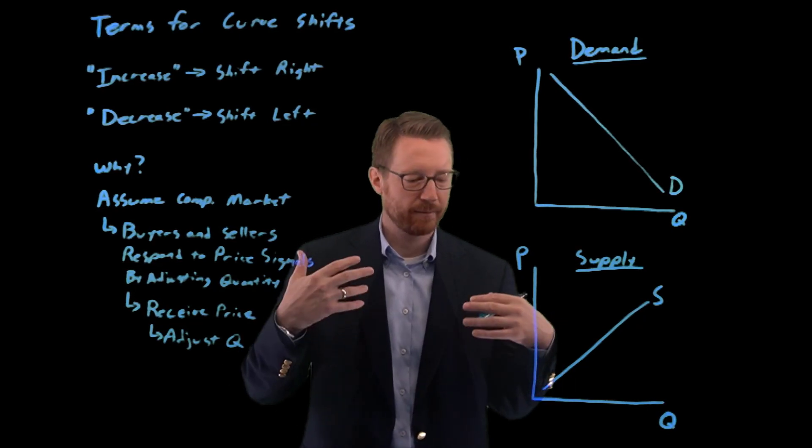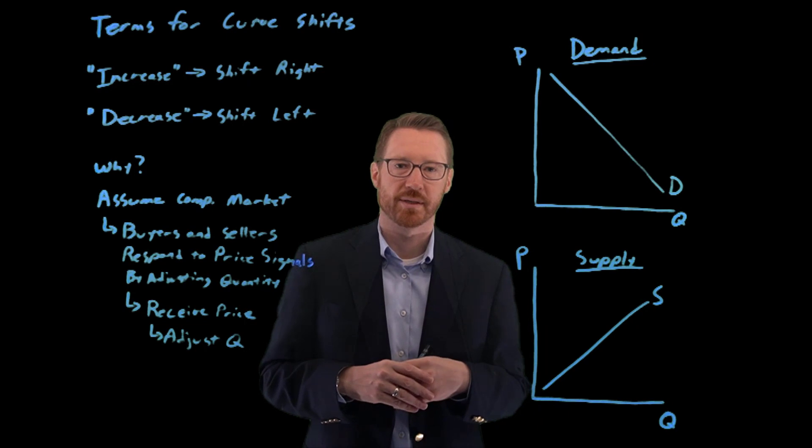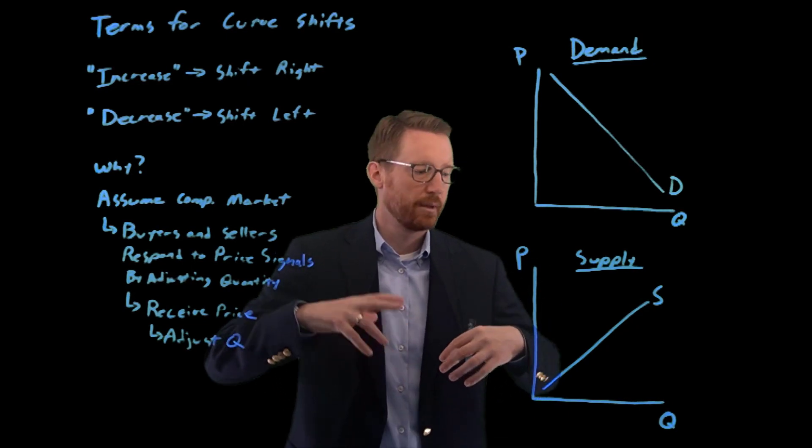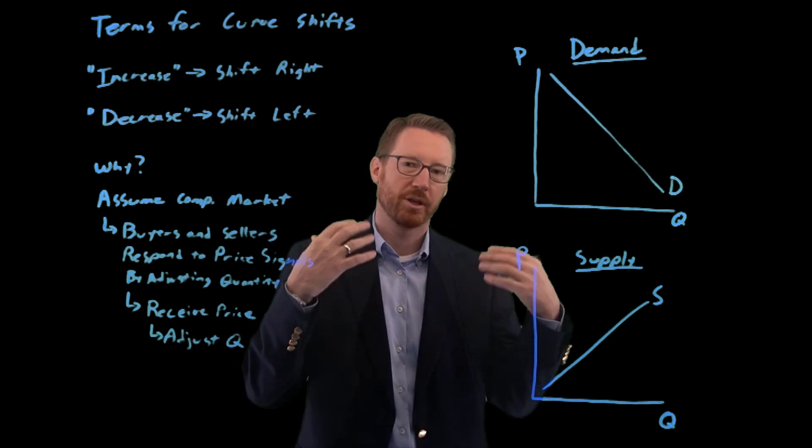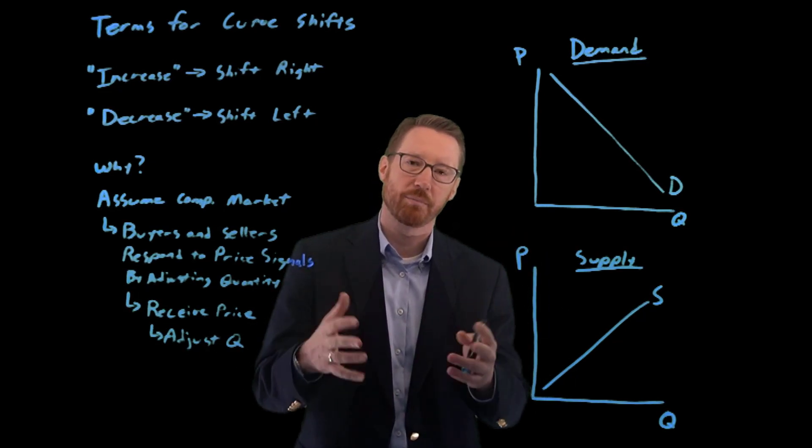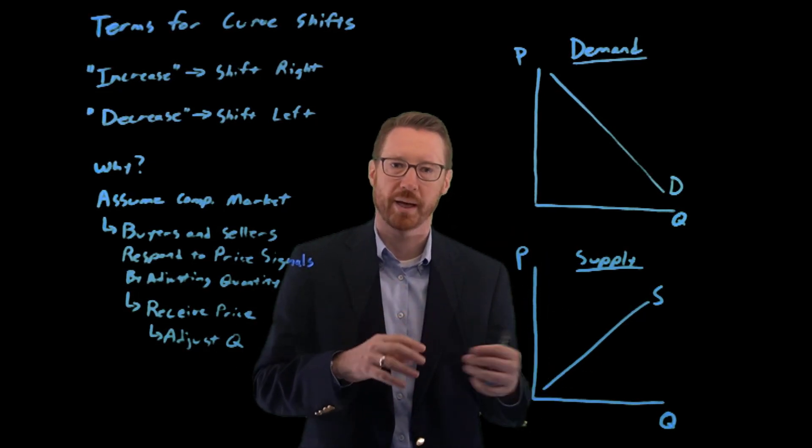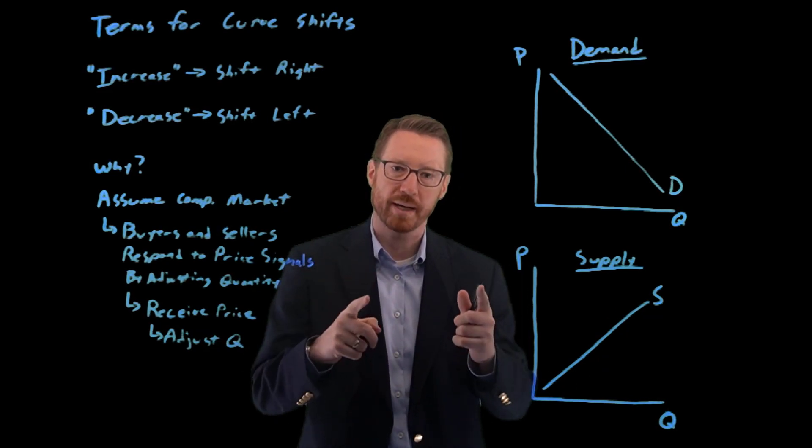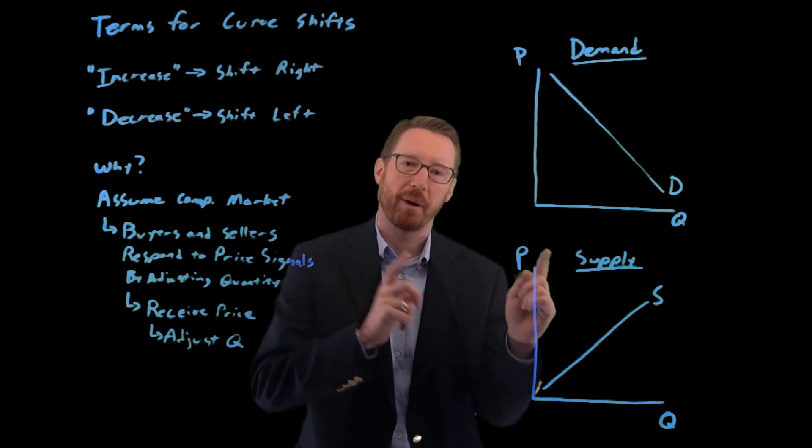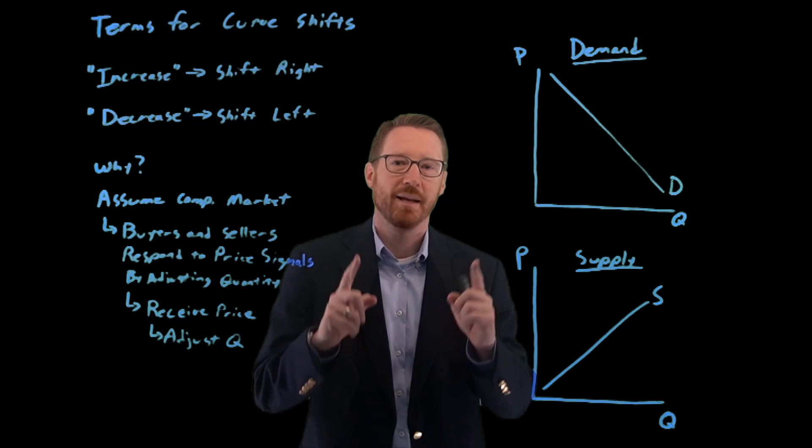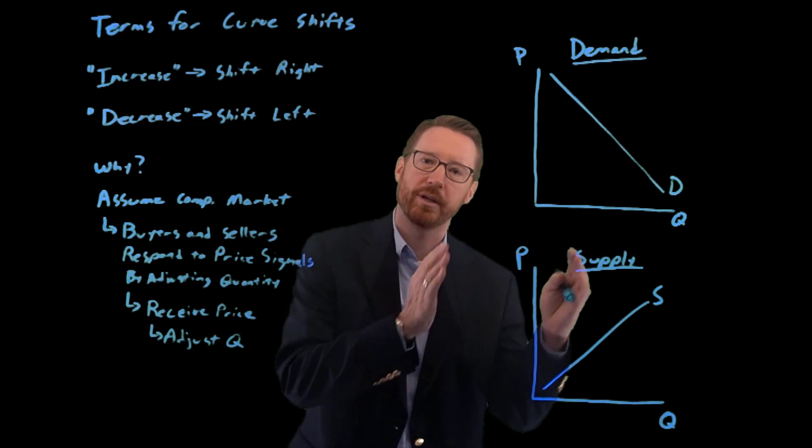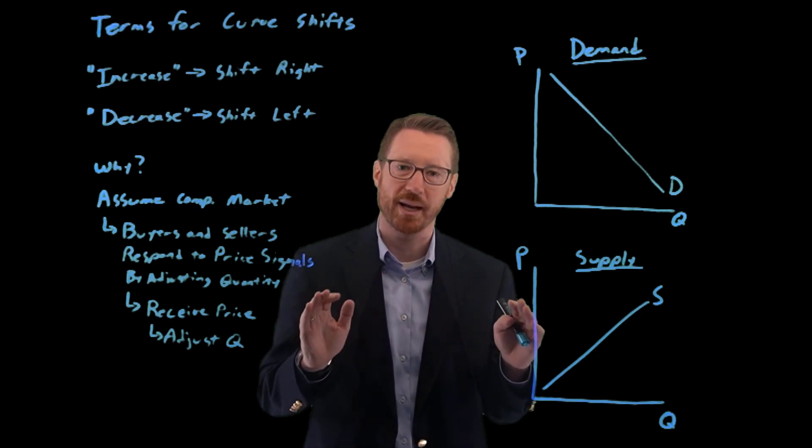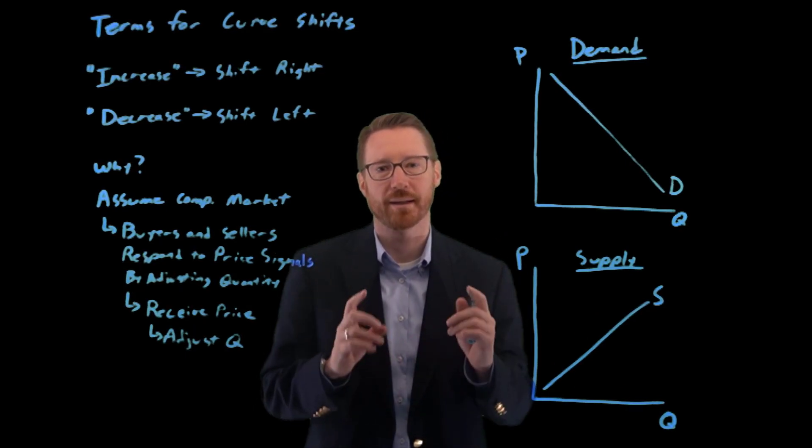If you decide for taste or preference reasons that you want to take better care of your teeth, you go to the store and see the price of a tube of toothpaste. You take that price and make a decision about the quantity you're going to buy. If you decide to improve your dental hygiene, you're going to buy more. That price hasn't changed. It's the quantity that's responding.